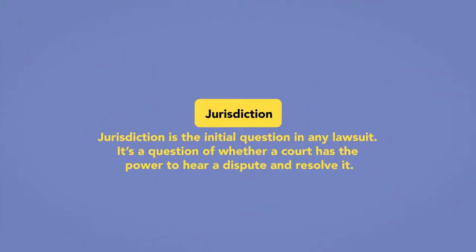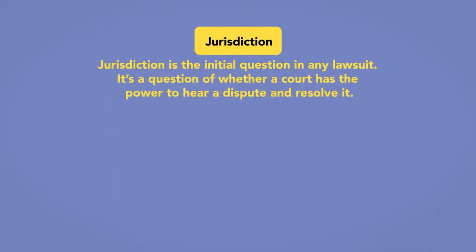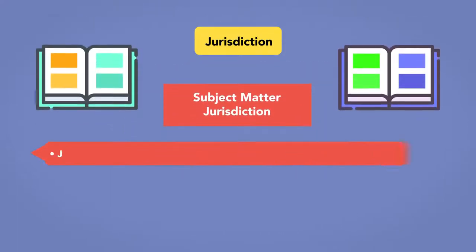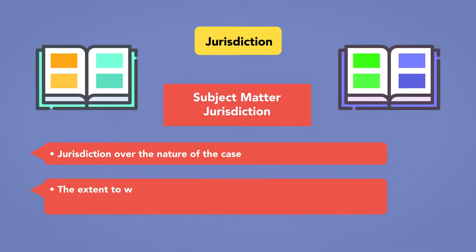Jurisdiction is the initial question in any lawsuit. It is a question of whether a court has the power to hear a dispute and resolve it. The first type of jurisdiction is subject matter jurisdiction, or jurisdiction over the nature of the case — the extent to which a court can rule on the conduct of people or the status of things.